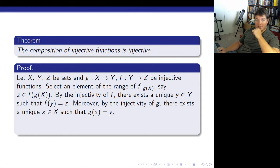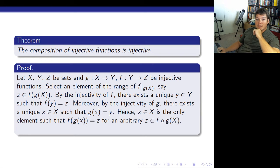Moreover, by the injectivity of g, there exists a unique x in x, such that g of x equals y. Hence, x in x is the only element such that f of g of x equals z. Or an arbitrary z in the image of g of x. f of g.